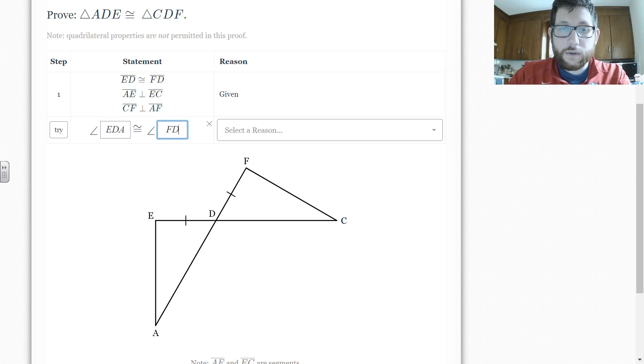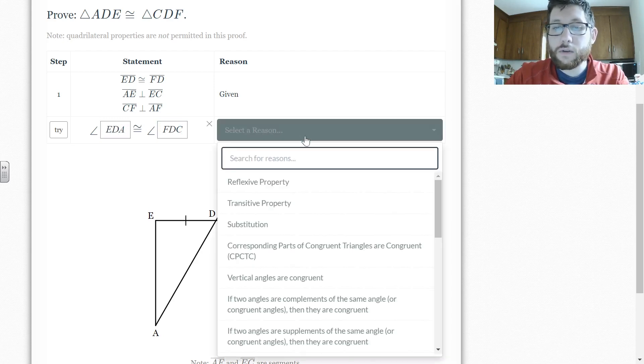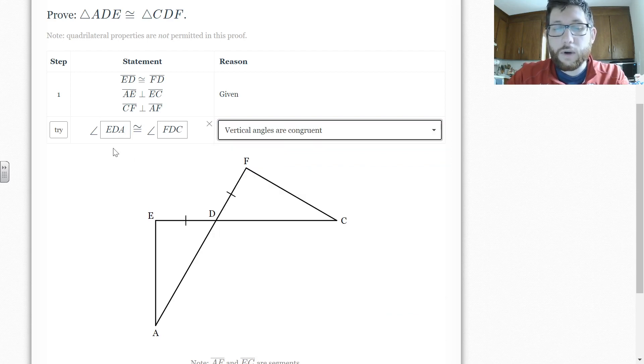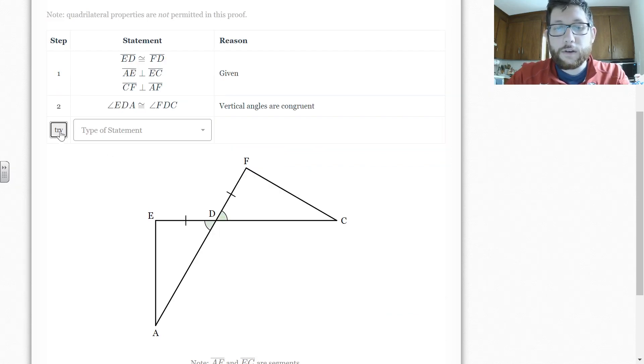And it won't punish you if you don't have them in the, well, you just need to make sure that the vertex is in the correct place when you're choosing your vertical angles. And you can actually even start typing in vertical angles and that'll show up here. All right. You can hit try.